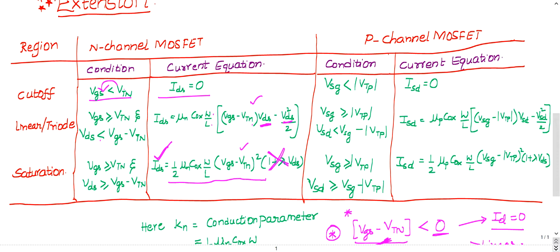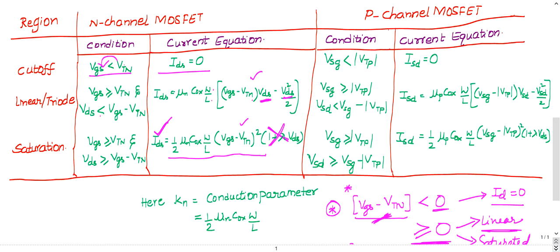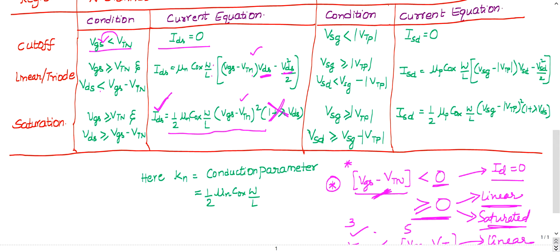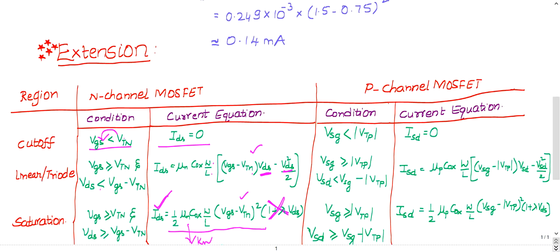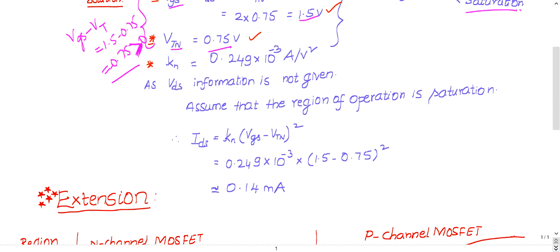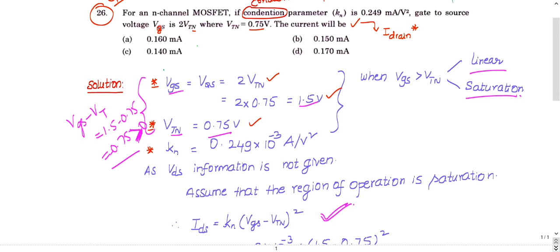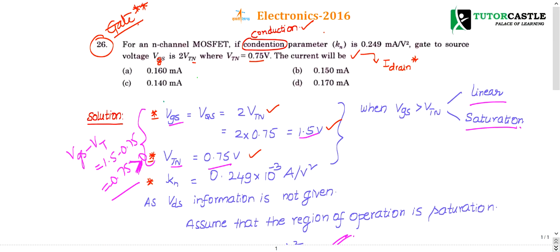In saturation and with λ not given, the formula simplifies to ID = KN·(VGS − VTN)². KN = 0.249 × 10⁻³, and VGS − VTN = 1.5 − 0.75 = 0.75. So ID = 0.249 × 10⁻³ × (0.75)² = 0.14 milliamperes. The correct answer is option C.